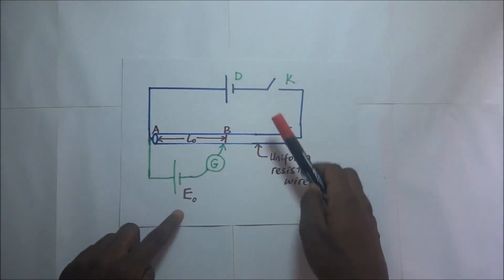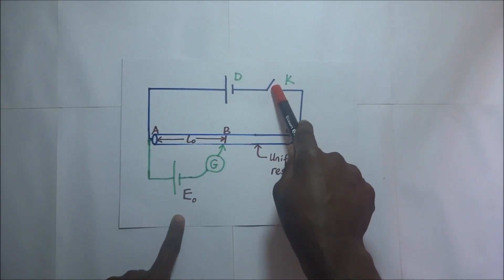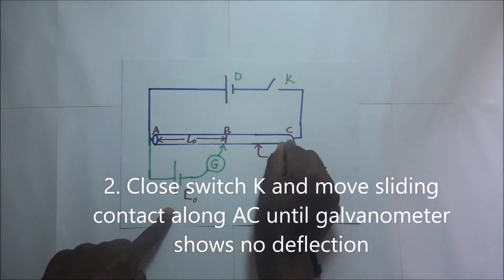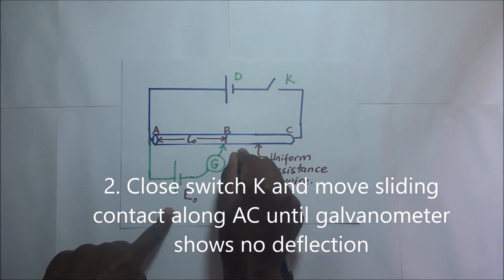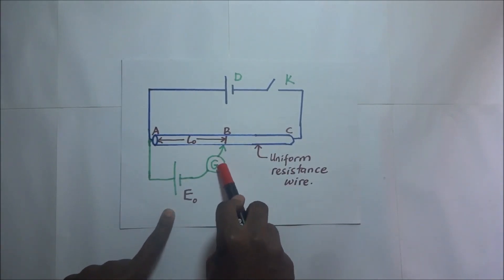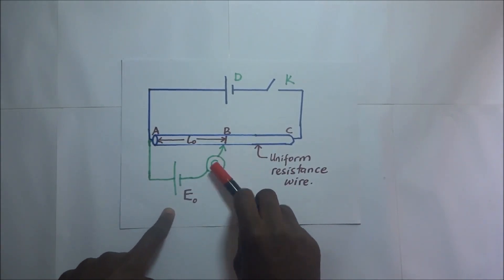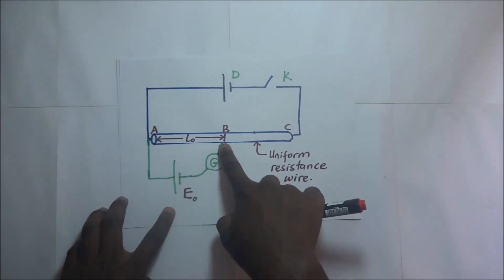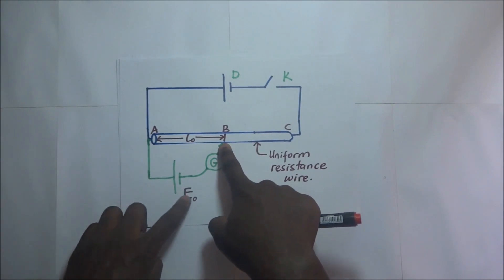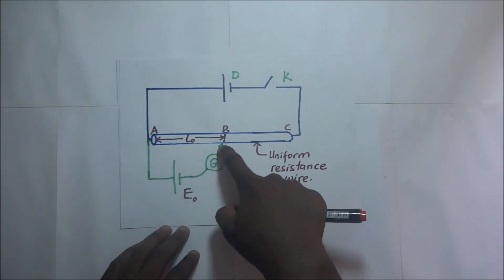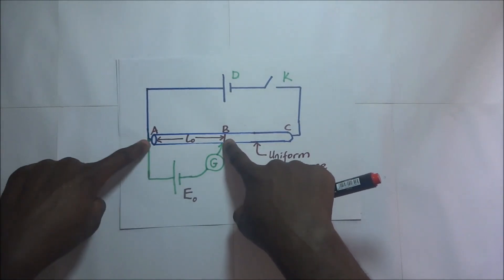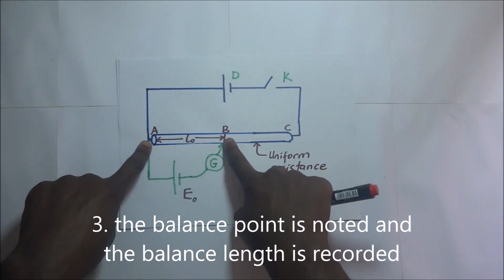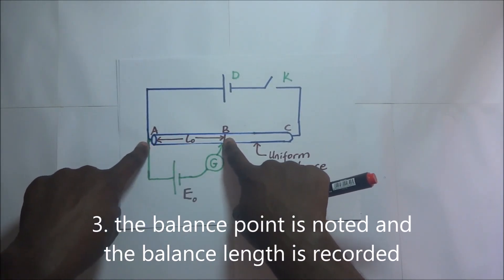After connecting everything in the potentiometer, we close switch K. We then take the jockey and slide it along the potentiometer wire until the point where there is no deflection of the galvanometer. When we reach a point where the galvanometer shows no deflection, that is the balance point. We then measure and record the balance length, which in this case we are calling L naught.